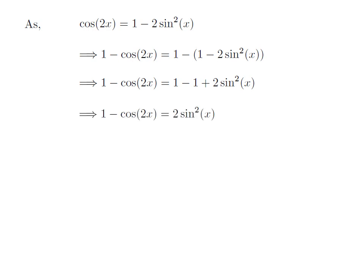This implies 1 minus cosine of 2x is equal to 2 times square of sine of x. So, we got the value of 1 minus cosine of 2x.